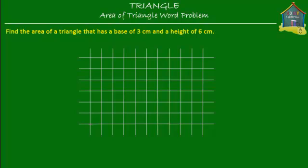Let's draw our triangle with a base of three centimeters. Three centimeters means I need to draw my base across three of these squares. Three of these squares together is three centimeters, so this base is equal to three centimeters. Now the height is six centimeters, so that would be one, two, three, four, five, and six squares. We draw the height here, equal to six centimeters — and that's our height.